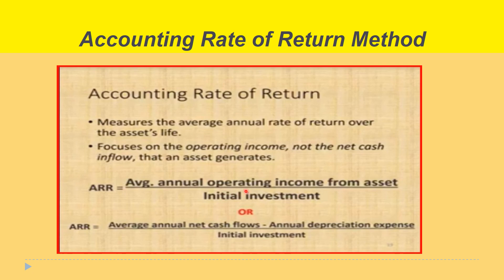In most questions you would get, you would not be given the annual operating income, but rather you would be given cash flows. If that is the case, what you would do is minus the annual depreciation expense from the cash flows to get the annual operating income from the asset. Then you divide it by the initial investment and express that as a percentage by multiplying by 100 to get the accounting rate of return.